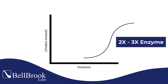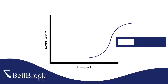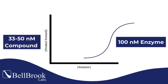Typically, a concentration of 2-3 times more enzyme than the compound's IC50 will give you the lowest limit of detection for an inhibitor. So, using 100nM enzyme, you can achieve accurate IC50s down to 33nM. Anything higher will be accurate as well.